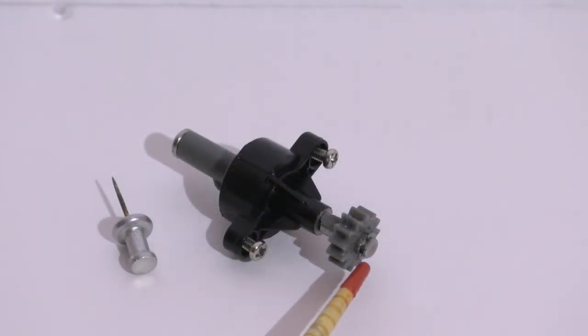This c-clip is going to have to be removed and one right back here that has to be removed. What I use to do that is a push pin. When you go to remove these little clips, do it in a bucket. I'm doing it out of the bucket to show you how it is done, but the c-clip is very easy to lose.